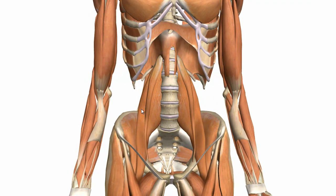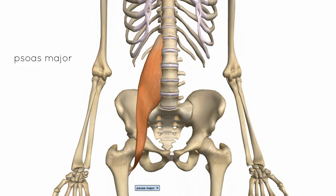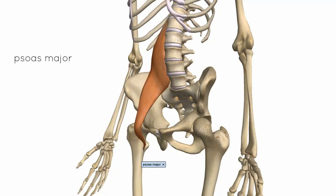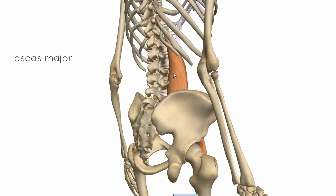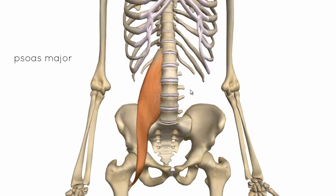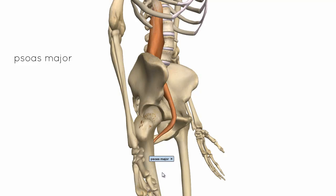Starting with the medial muscles, the psoas major and minor. This large muscle is the psoas major. You can see its attachment on the vertebral bodies — it attaches from T12 down to L5. Fading away the other muscles, you can see its insertion on the lesser trochanter of the femur. Its origin sits anterolaterally on the vertebral body, in front of the transverse processes on the bodies of vertebrae T12 down to L5. It serves as a hip flexor, flexing the thigh at the hip joint.